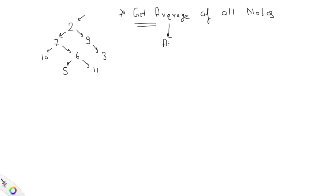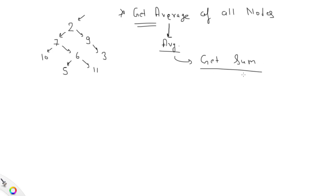We need to find the average of all the nodes. Generally, to find an average — say we have an array with ten elements — we get the sum of all elements and then divide by the number of values. The same thing applies here: we need to calculate the sum of all nodes and then divide by the number of nodes in the binary tree.